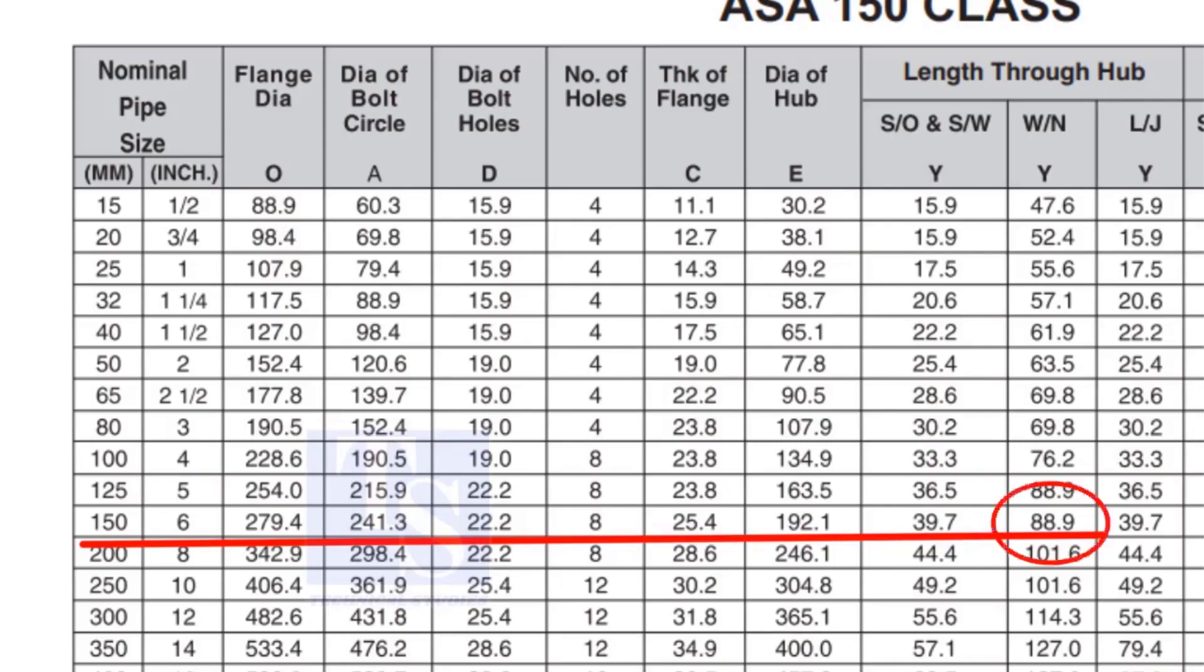Check the height of the flange in the table. Since the pressure rating is 150, the height of the flange is 88.9mm. Note down the height.